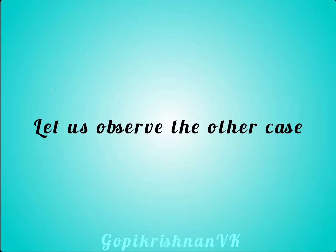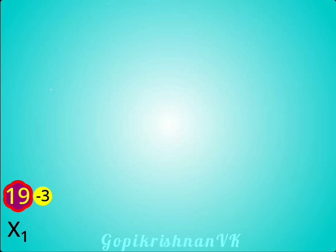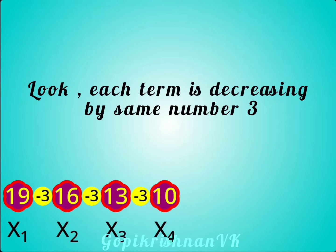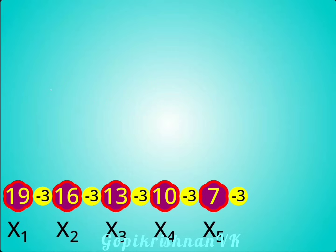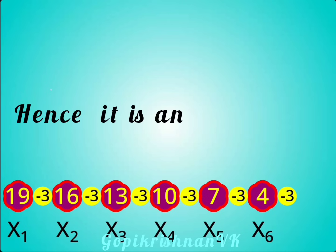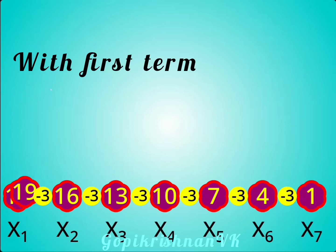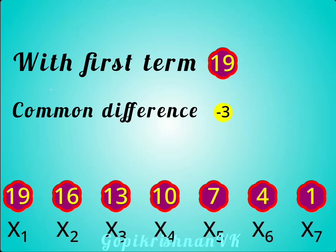Let us observe the other case. Look, each term is decreasing by the same number 3. Hence, it is an arithmetic sequence with first term 19 and common difference minus 3.